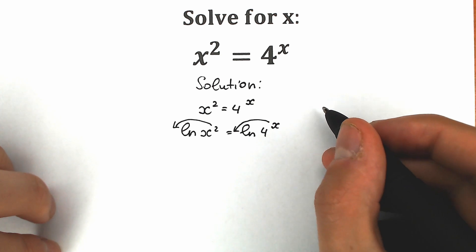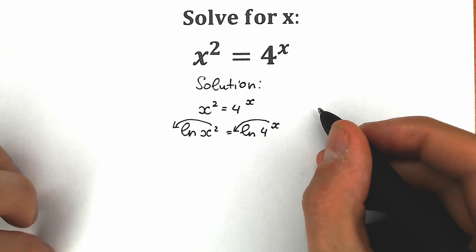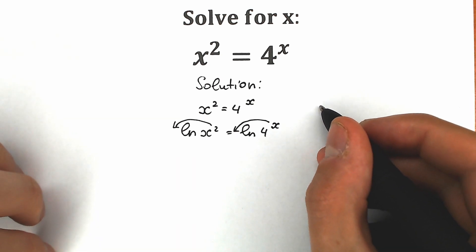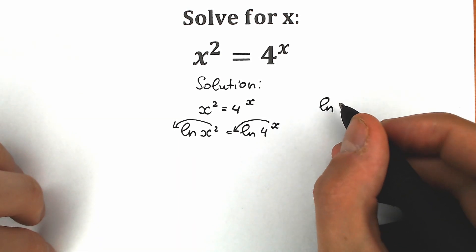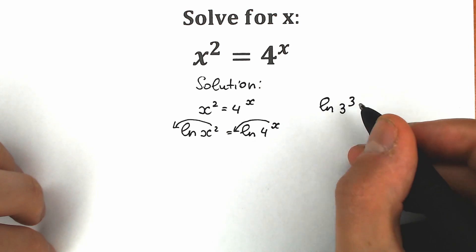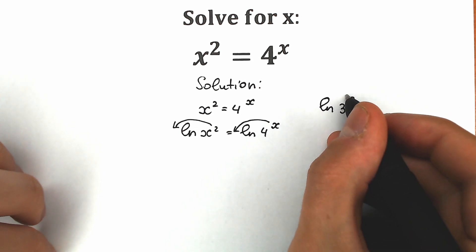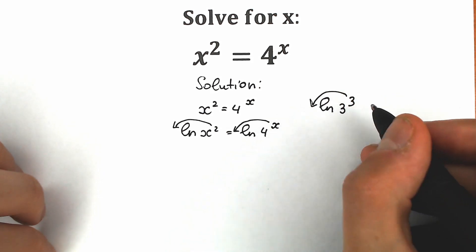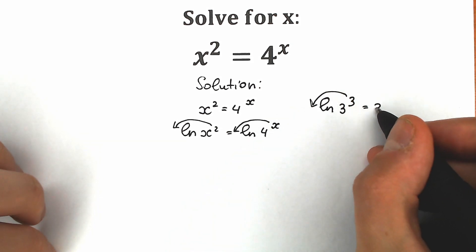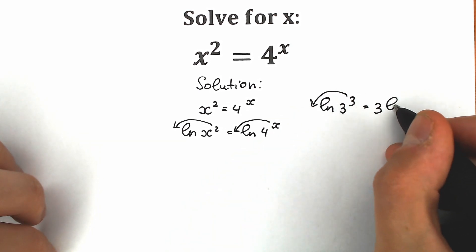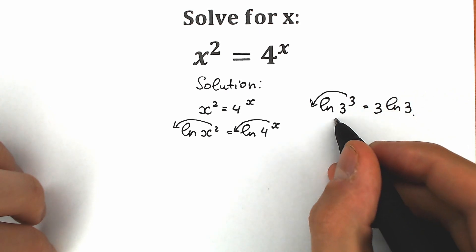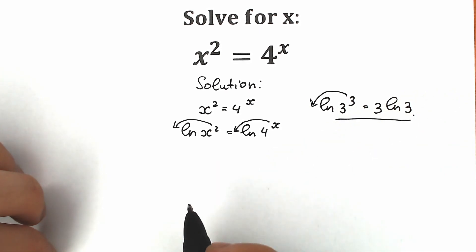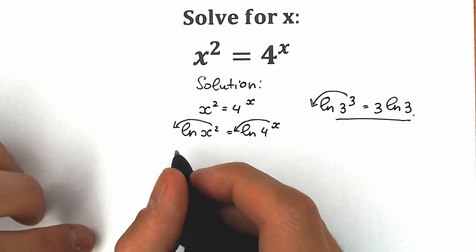I hope you know this property. For example, if you have natural log of 3³, these 3 will come down right here. So we have 3 natural log 3. This is the main log property.